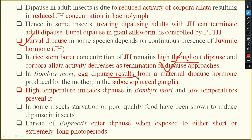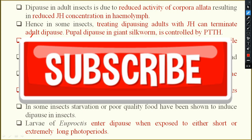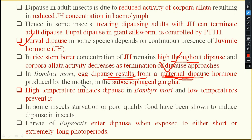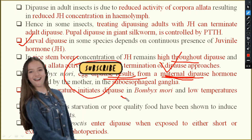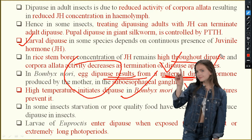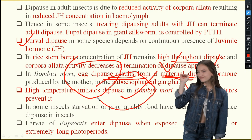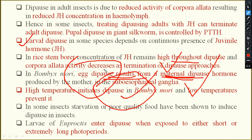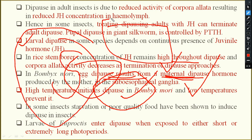In Bombyx mori, egg diapause is due to maternal diapause — a maternal diapause hormone produced by the mother in the suboesophageal ganglion causes the egg to undergo diapause. High temperature initiates diapause in Bombyx mori, but low temperature terminates it. Therefore in sericulture, eggs are kept at low temperature so they won't undergo diapause and larvae emerge early.